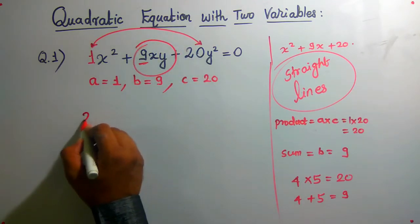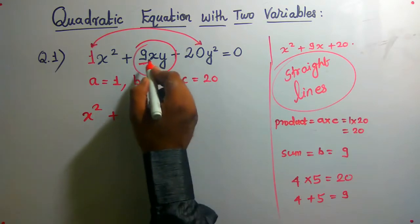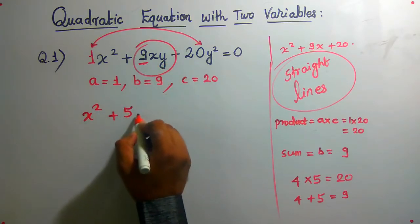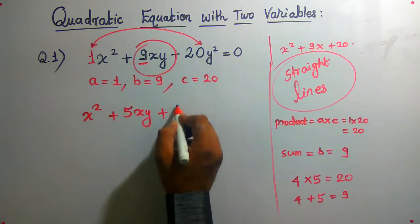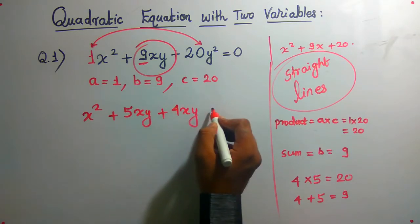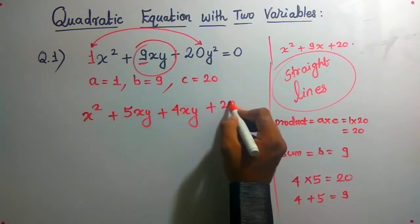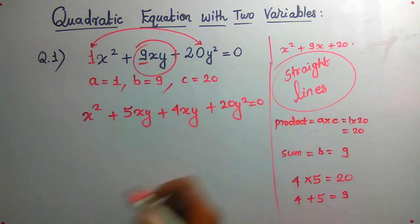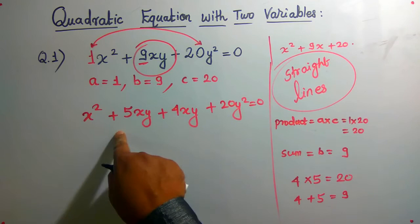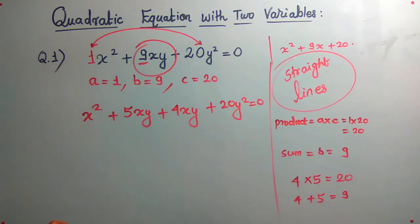Now split the middle term. We will write x² + 9xy as x² + 5xy + 4xy + 20y². A point to be noted: whether you write 5xy + 4xy or 4xy + 5xy, the answer will not change.